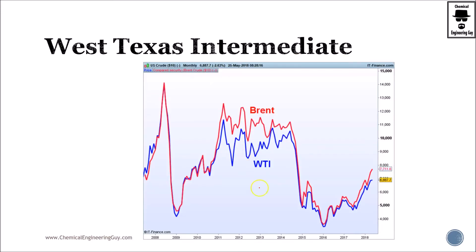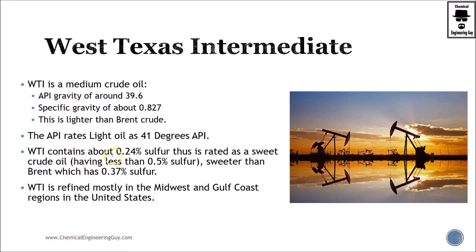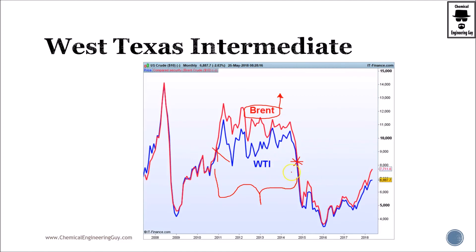This is the price of both Brent and West Texas Intermediate. As you can see, from 2015 we have similar prices, and before 2011 we also had similar prices. So what happened between those years? Why did Brent increase in price even though it is not that sweet? West Texas Intermediate has 0.24% sulfur versus Brent which has 0.33% sulfur. Try to find something that explains the divergence between Brent and WTI from 2011 to 2015.